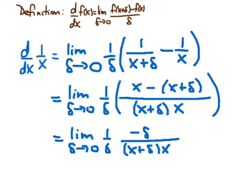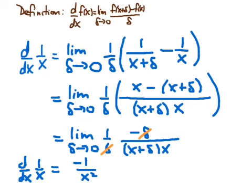We have limit as delta goes to zero, 1 over delta, times minus delta over x plus delta times x. The delta in the numerator cancels the 1 over delta factor, leaving minus 1 in the numerator. It is now safe to take the limit as delta goes to zero. The limit gives minus 1 over x squared, since x plus delta approaches x. So we conclude the derivative of 1 over x is minus 1 over x squared — the standard result from the rule for differentiating x to the n, giving n times x to the n minus 1.